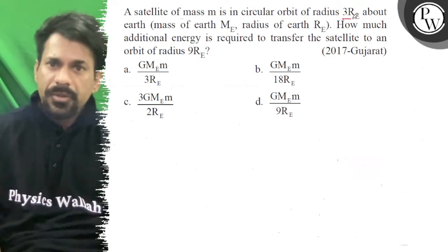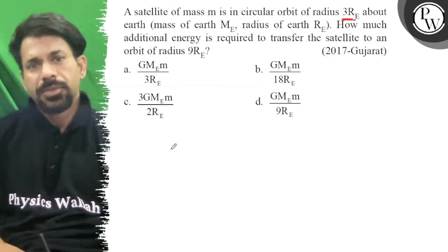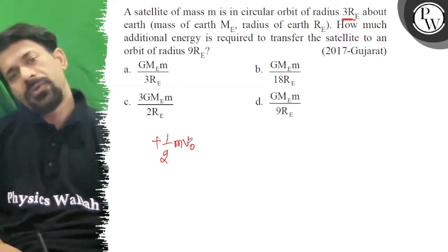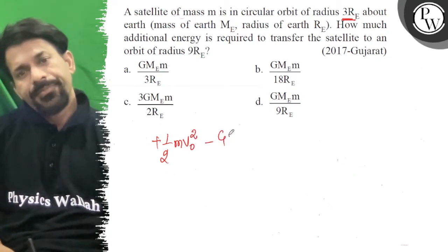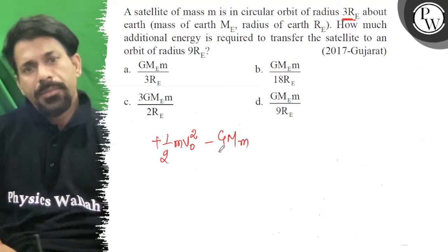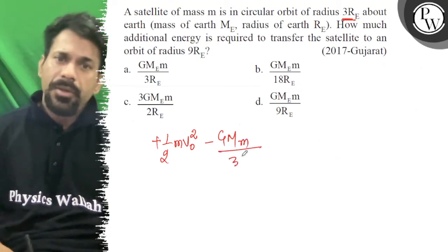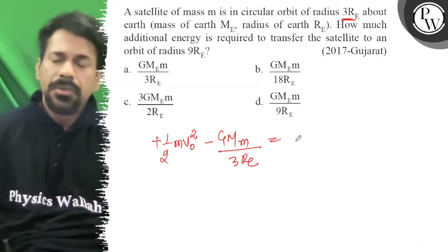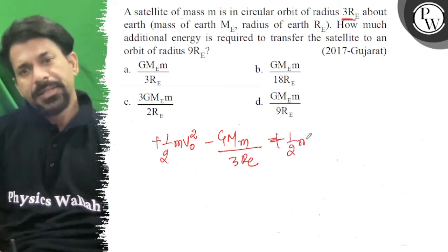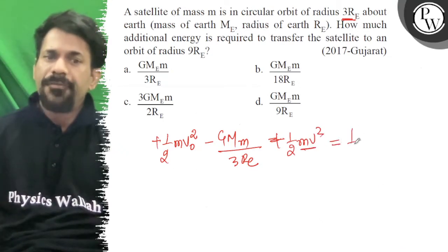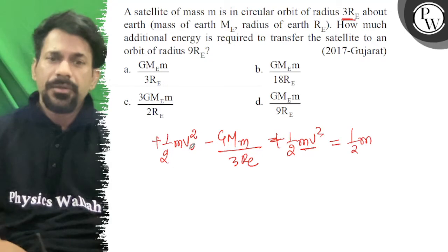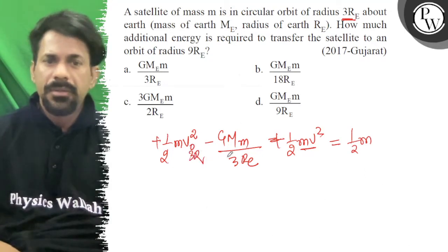So first let's see the energy in the 3Re orbit. Plus half of mv² - v0 orbital speed - GMm upon 3Re is equal to... plus additional kinetic energy is equal to half of m into this 3R orbit, half of mv0².